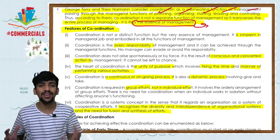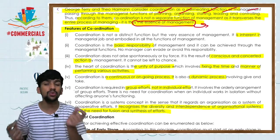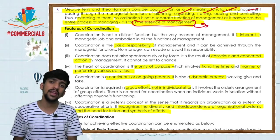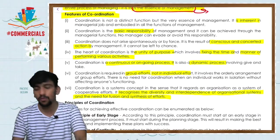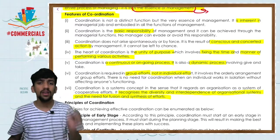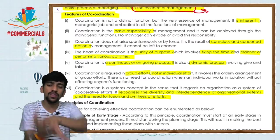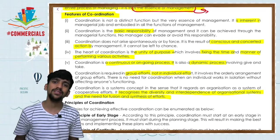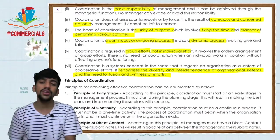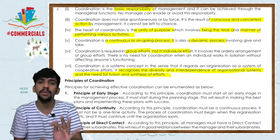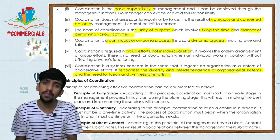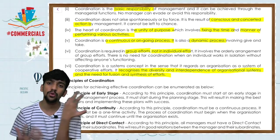The third feature is conscious and concerned action by management. Coordination is not about shooting arrows in the air — it is a conscious and concerned action taken by management. Planning must be done with coordination in mind. It is not easy to coordinate two managers from different departments with different attitudes to achieve the organization's goal. Next, unity of purpose — fixing the time and manner of performing various activities is also a feature, and coordination is a continuous, ongoing, and dynamic process that must be updated regularly.